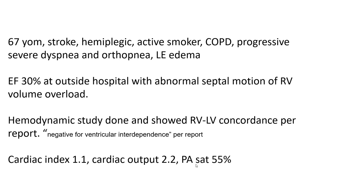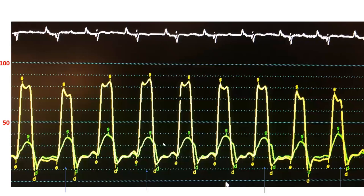We brought him here and did the catheterization. I did the cath mainly thinking he had ventricular failure — I did not think based on the echo findings that he had constriction. I did the RV-LV recording, and I liked it because it showed me something surprising. So look at the recording — is there concordance or discordance?